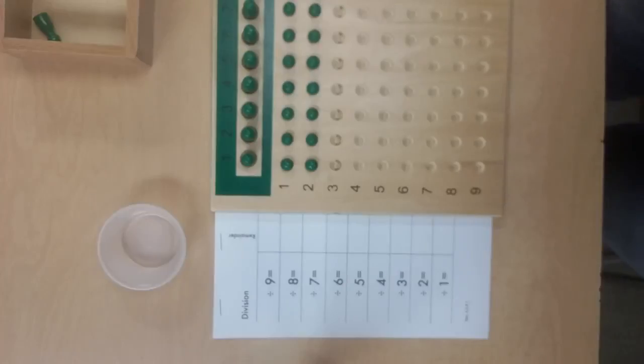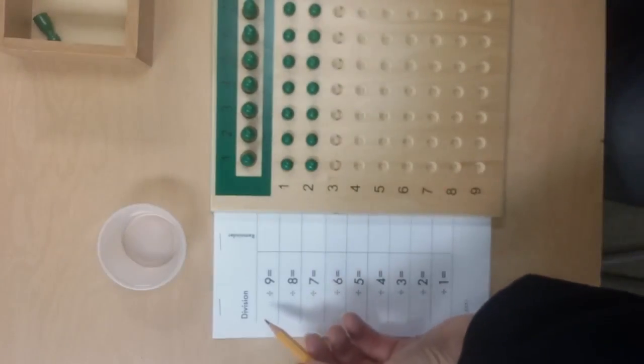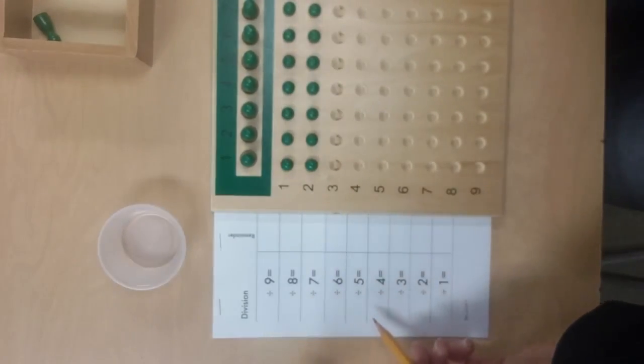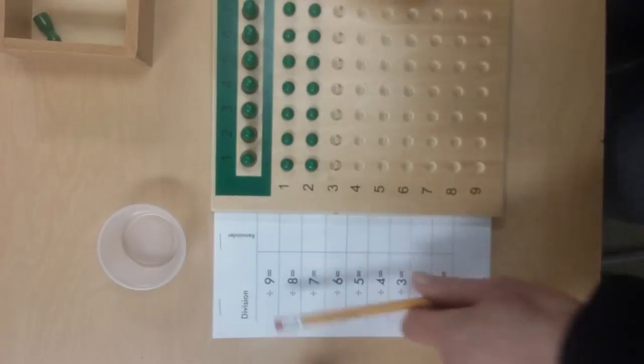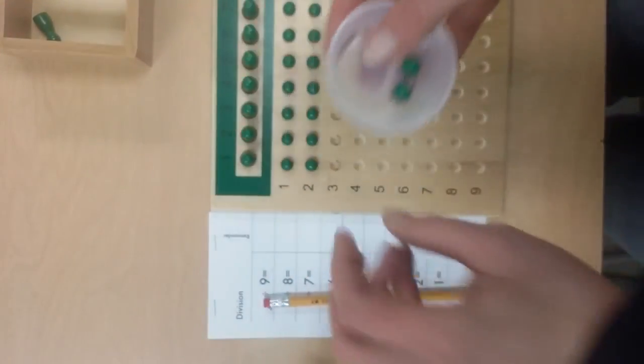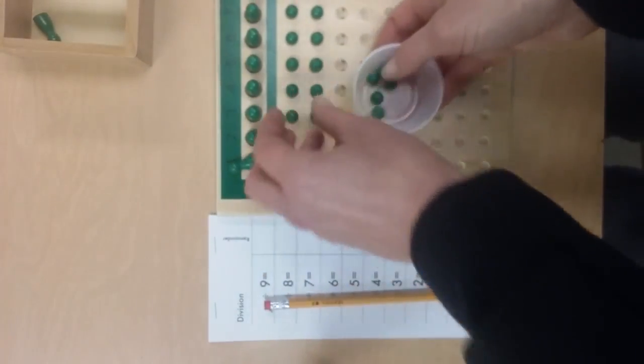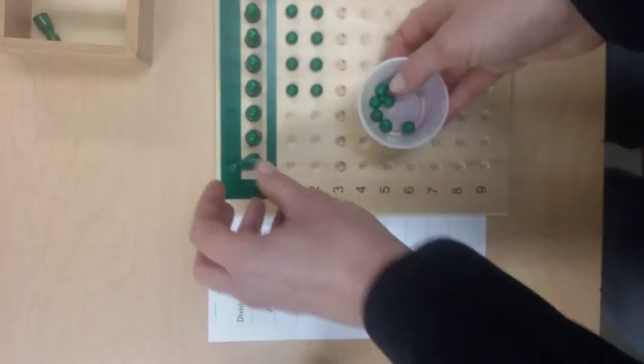Maybe they choose 36 this time, so they would write 36 in all these rows and count out 36 of these little beads. Sometimes they might discover when they are using the division board that they have beads and they've run out of places to put them, because this stops at 9.